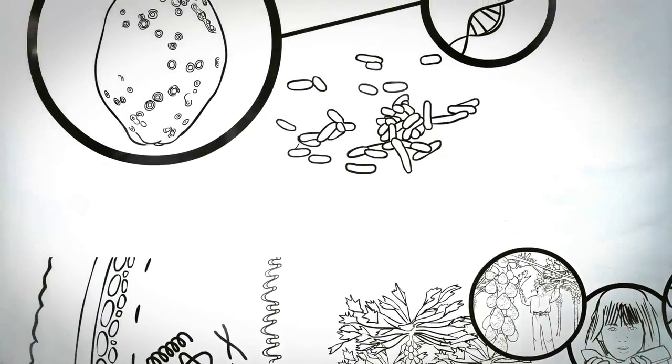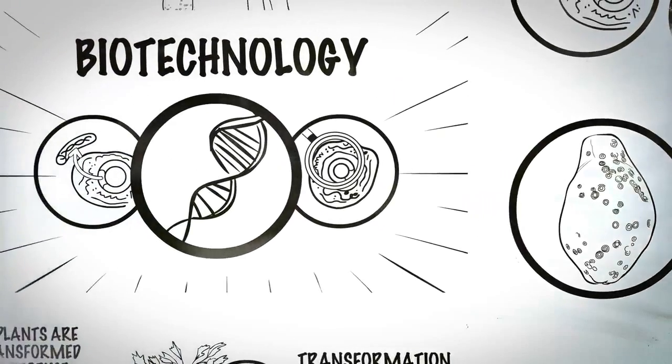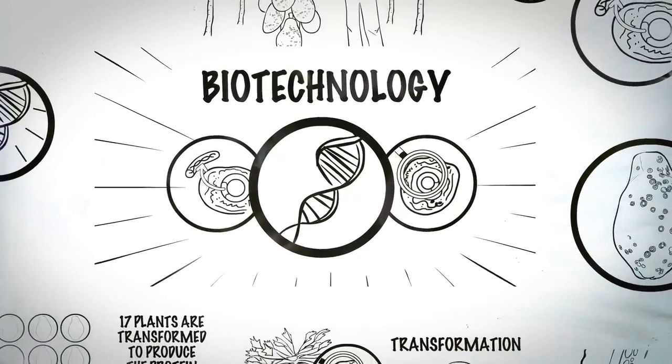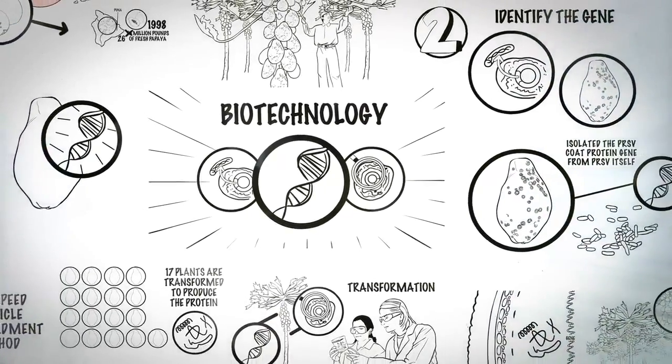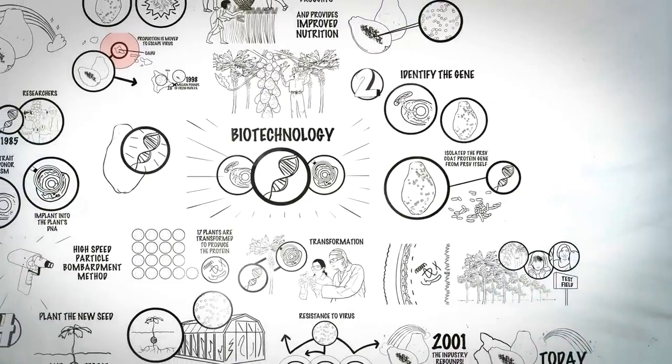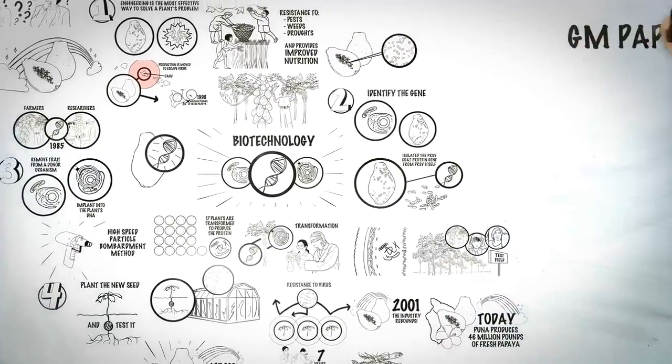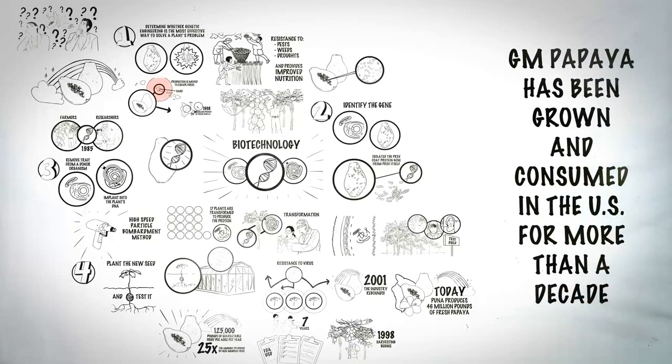Genetic engineering allowed the introduction of PRSV resistance without altering other traits of the papaya or changing the plants in other ways. The plants were exactly the same in nutrition and safety. As of 2010, 70% of Hawaii's papaya industry is GM papaya. GM papaya has been grown and consumed in the U.S. for more than a decade. This is just one GMO story. We hope to share more with you. Please, share your comments!